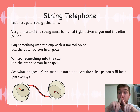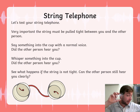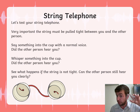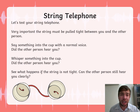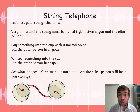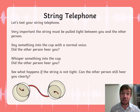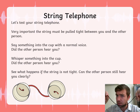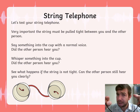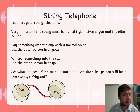One person puts their ear on one cup and the other person talks into the other cup — remember, the string needs to be tight. First, try speaking in a normal voice: 'Hello, my name is...' and ask the listener if they heard you. Then try whispering something funny, like 'I like ice cream,' and ask if they heard that. Now test what happens if the string is loopy — did you hear the person as clearly as before? Why not? Think about that.